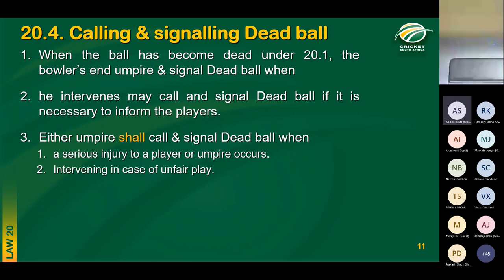Either umpire needs to call and signal dead ball if they need to intervene in the case of unfair play. The moment either umpire sees any form of unfair play on the field, call and signal dead ball and then intervene.